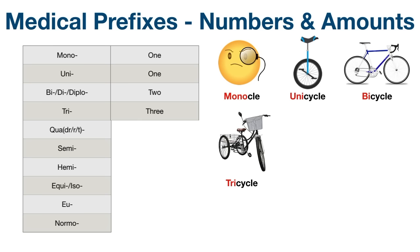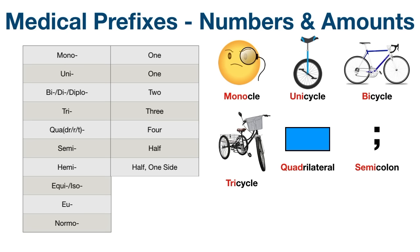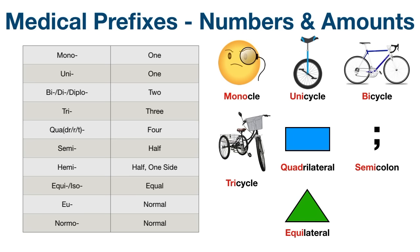Next we have the prefix quad, which means four or quadruple. Think of a quadrilateral — a four-sided shape — or in medical terms, your quadriceps, which contain four parts or muscles. Next, semi or hemi both refer to half or one side — think of a semicolon, which is half of a colon. Equa or iso means equal — think of an equilateral triangle with three equal sides. Finally, eu and normo both mean normal; for example, euglycemic means a normal level of sugar in the blood, and normotensive means normal blood pressure.